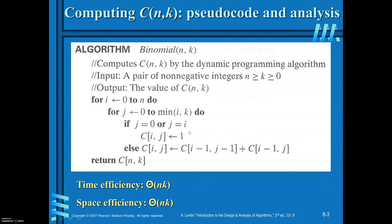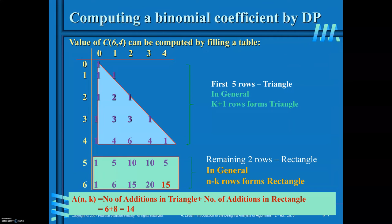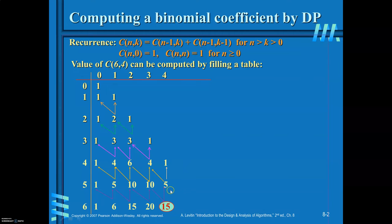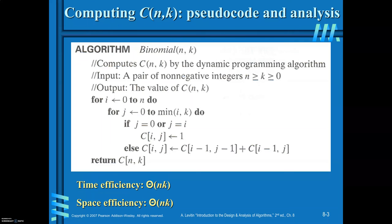The time and space complexity of this binomial coefficient algorithm is Theta(N × K). The basic operation being performed is addition: to find C(N,K) you add C(N-1,K) and C(N-1,K-1). So the basic operation performed in this algorithm is addition.